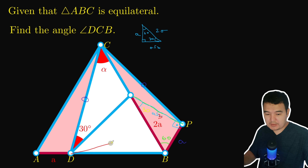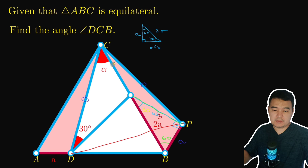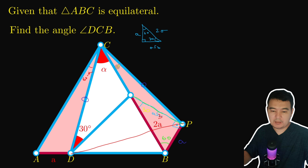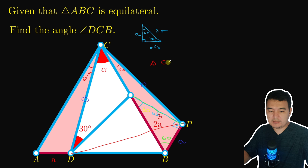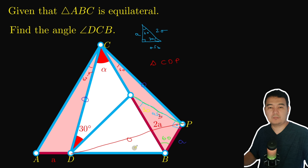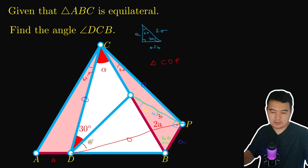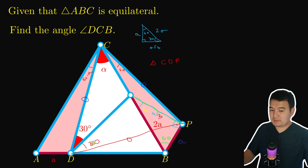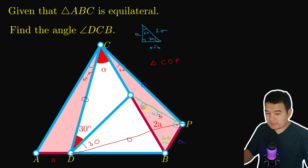The next step is to connect points D, P and observe that since this angle is 60 minus alpha and this angle is also 60 minus alpha, we can see that triangle CDP is an equilateral triangle. That makes this angle 30 degrees.